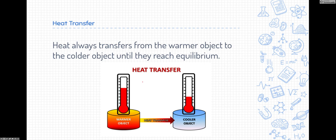Speaking of heat transfer, heat always transfers from the warmer object to a colder object until they reach what we call equilibrium, or until they reach the point where they are about the average of the two temperatures.